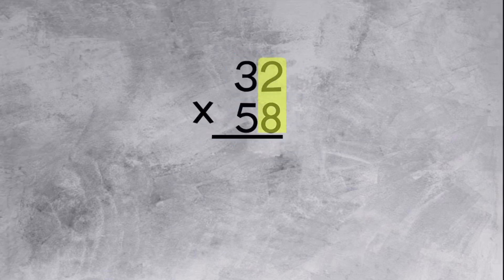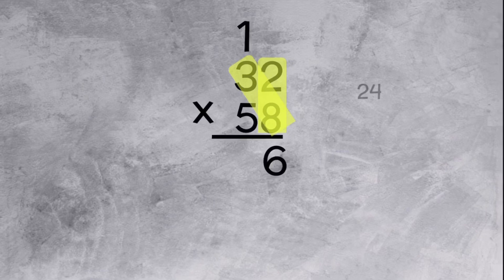8 times 2 equals 16. Let's carry the 1 and bring down the 6. Let's multiply 8 times 3. 8 times 3 is 24, but we have the 1 at the top that we need to add.